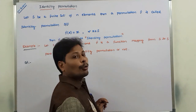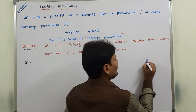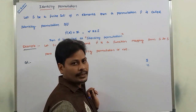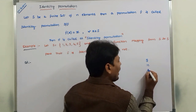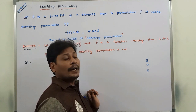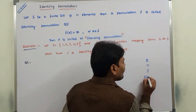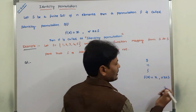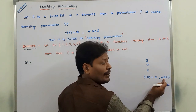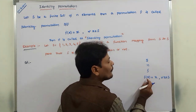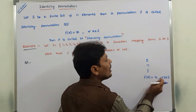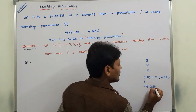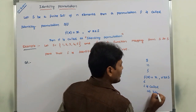First of all, what is identity permutation? Let capital S be a finite set that contains n number of elements. f is called an identity permutation if and only if f(x) is equal to x, for all x belonging to S. We can take any element x in S — the image of x is equal to the same element x. Then f is called an identity permutation.